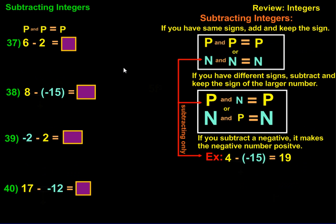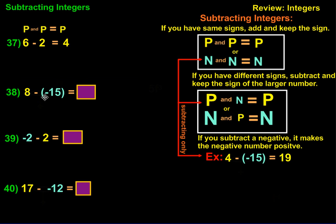And lastly, let's take a look at subtracting integers. For number 37, we have 6 minus 2. The rule is a positive minus a positive, and as long as the first positive is larger, it gives us a positive answer — which is true here. So 6 minus 2 gives us positive 4. For number 38, we have a positive being subtracted from a negative, so we have two negatives. Those combine to give us a positive. So we're going to have 8 plus 15, which gets us 23.